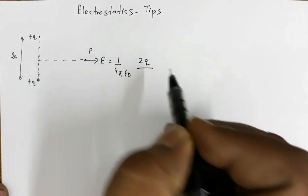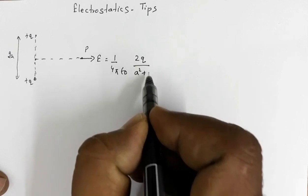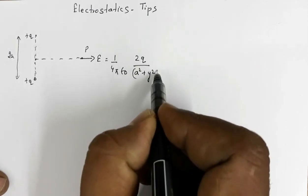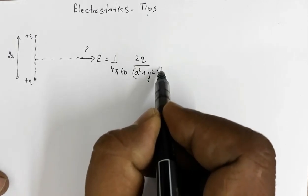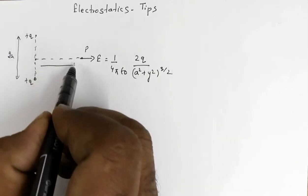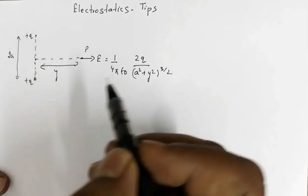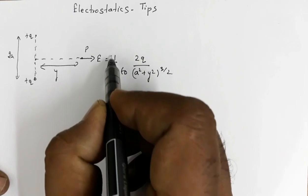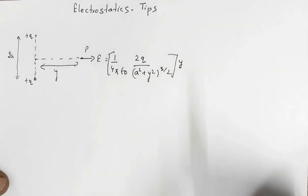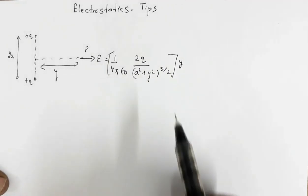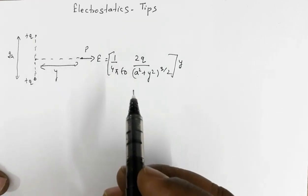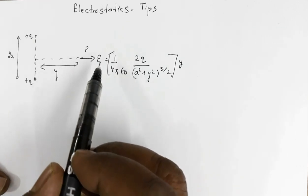...multiplied by y. This is the value of the resultant field. Now in case these charges are replaced by negative charges, the value of the field will be the same magnitude but directed in the opposite direction.